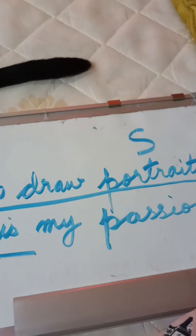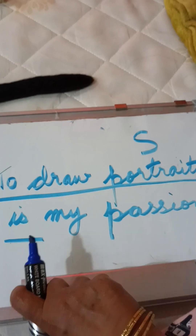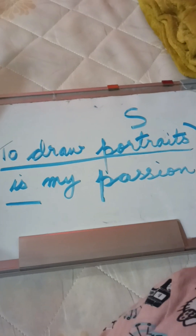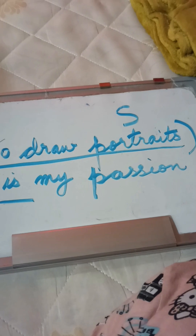Subjects and objects are nouns, so if a phrase is being used as a subject in a sentence, it is called a noun phrase. Similarly, if a phrase is being used as an object, it is also called a noun phrase.